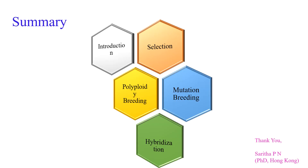In summary, from this video we have learned different methods of plant breeding, which includes introduction, selection, polyploidy breeding, mutation breeding, and hybridization. I hope you enjoyed this video. Thank you and see you in the next video.